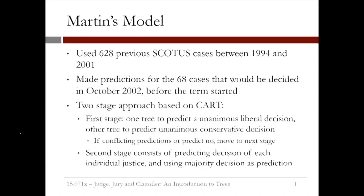Can a CART model actually predict Supreme Court case outcomes better than a group of experts? Martin and his colleagues used 628 previous Supreme Court cases between 1994 and 2001 to build their model. They made predictions for the 68 cases that would be decided in October 2002, before the term started. Their model had two stages of CART trees.